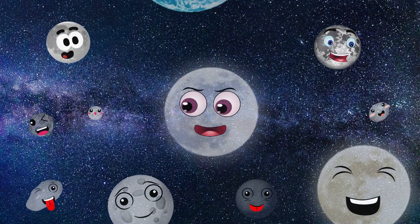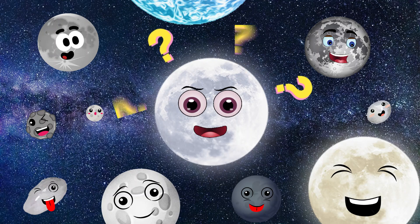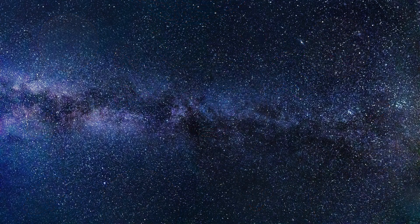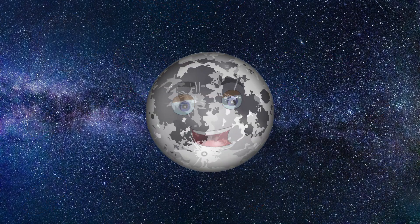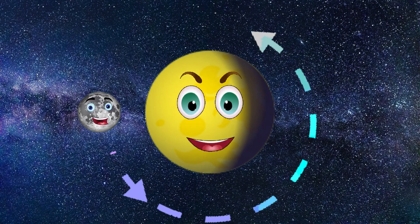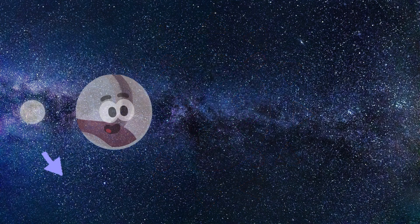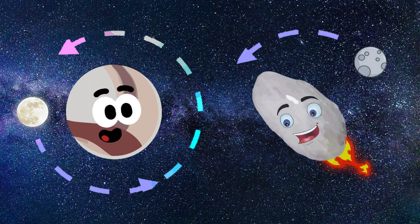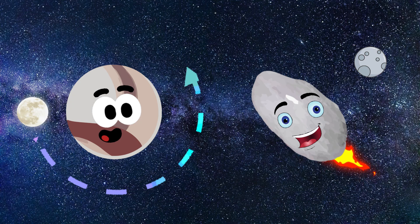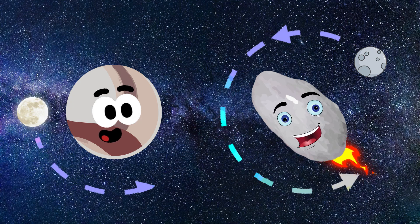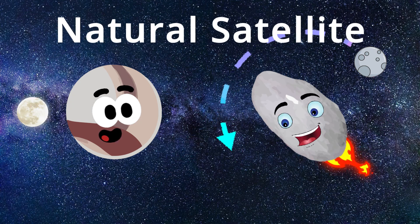There are hundreds of moons in our solar system, but what is a moon? A moon is an object that orbits a planet or something else that is not a star, such as dwarf planets and large asteroids. Objects that orbit other objects are also sometimes called natural satellites.